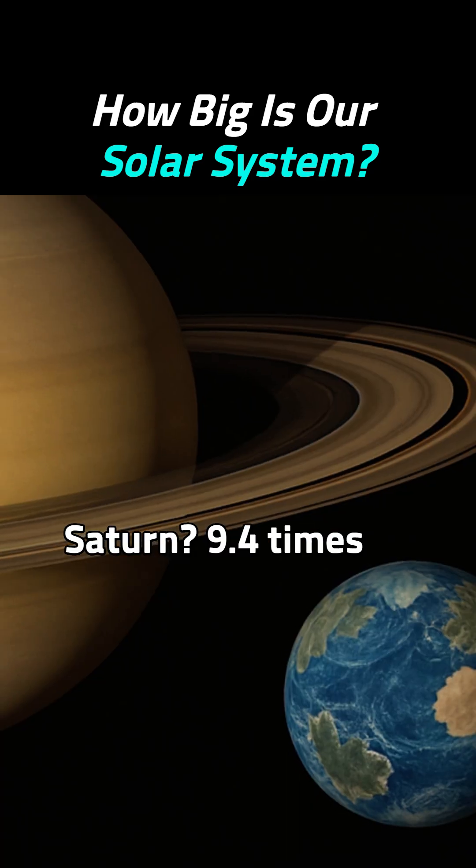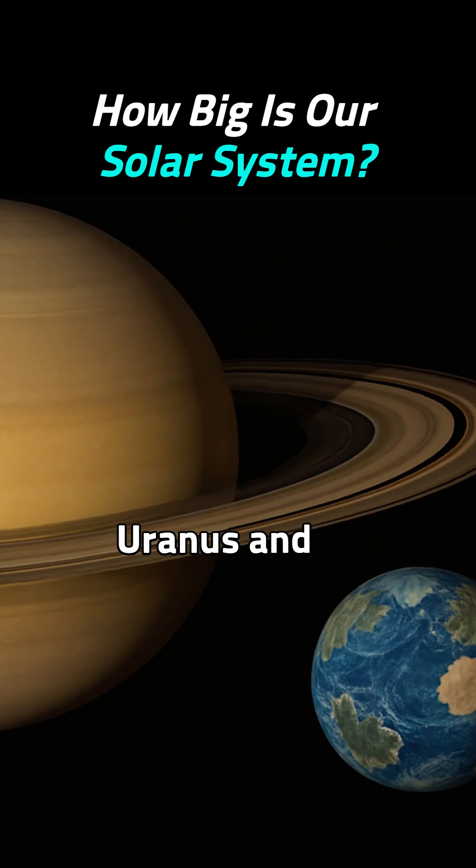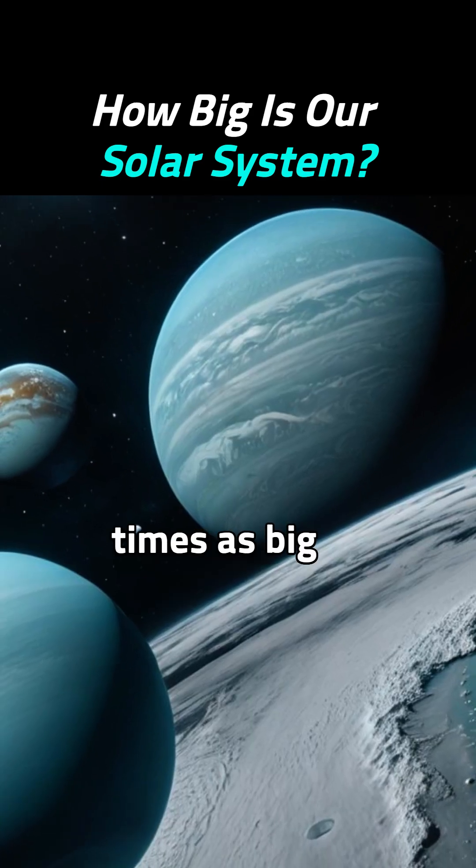The giant—11 times Earth's size. Saturn is 9.4 times. Uranus and Neptune are both about four times as big.